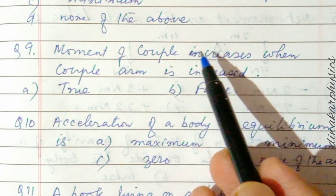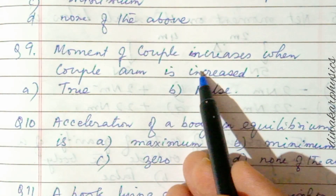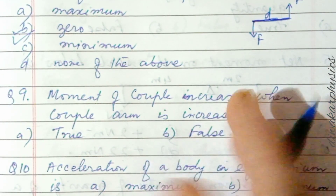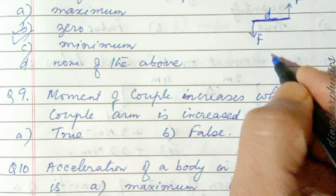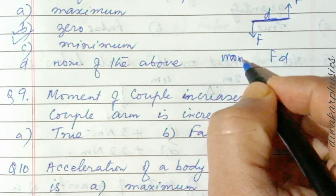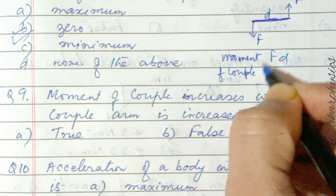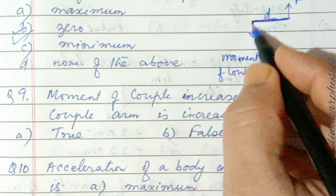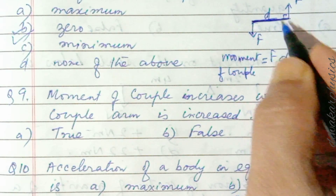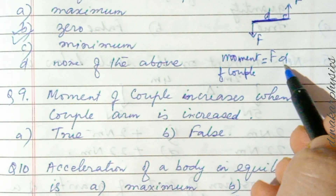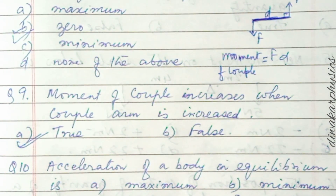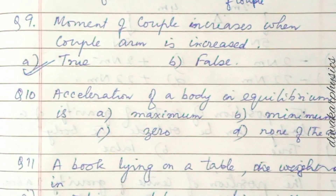Question nine: moment of couple increases when couple arm is increased — true or false? The moment of couple equals force into the perpendicular distance between the two forces, which is the couple arm. When this distance increases, the moment of couple increases. Answer is true.